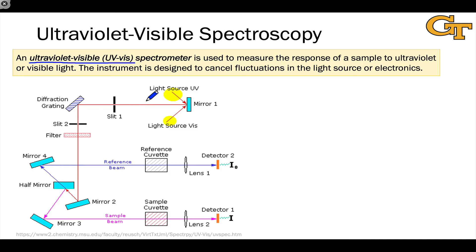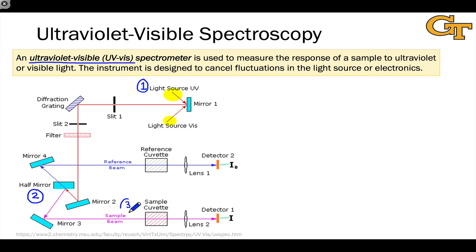Working through this diagram of an ultraviolet-visible spectrometer, we start at the light sources. We have separate sources for the ultraviolet and visible light. These are combined via mirror one into a single light source. This passes through a series of slits and a diffraction grating to select a particular wavelength of light. At point two, we reach a beam splitter, which divides the light into the reference beam — going through a reference cuvette, through a lens, and hitting a detector — and the sample beam, which heads through our sample, is focused by a lens, and hits a detector. We get two measurements: the reference intensity I0, and the measured intensity, which is attenuated relative to I0 as a result of absorption by the sample.